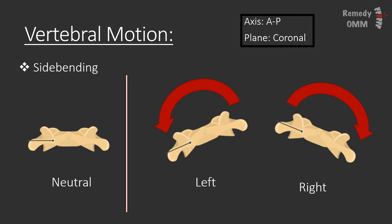The last component of vertebral motion is side bending, also known as lateral rotation, which occurs left or right. We figure this out after the other two components are determined, and we use Freyett's principles to do so.